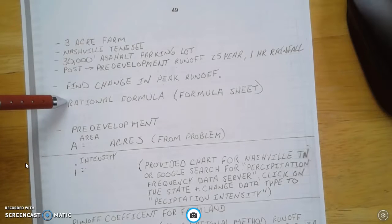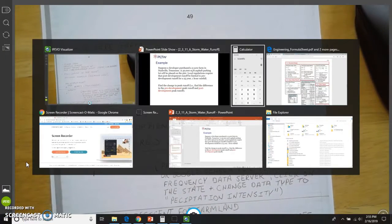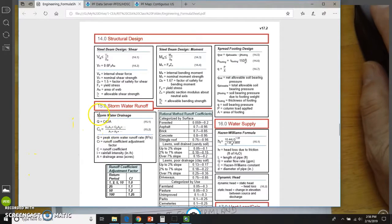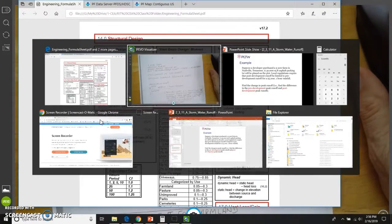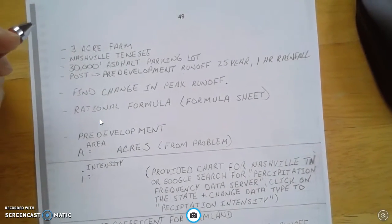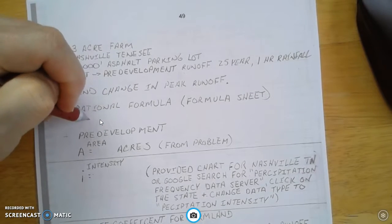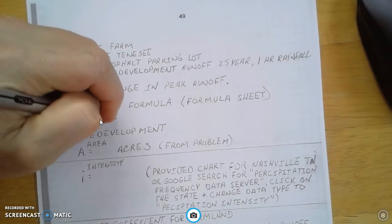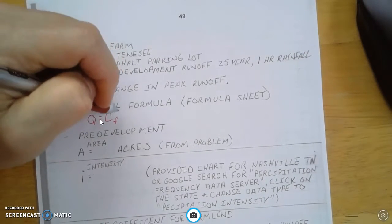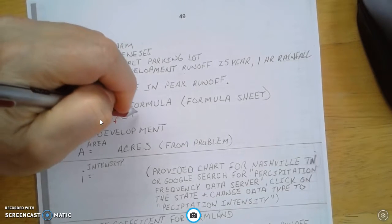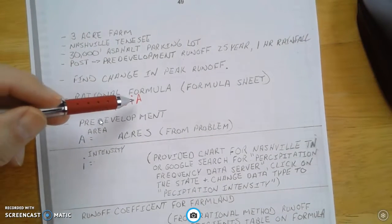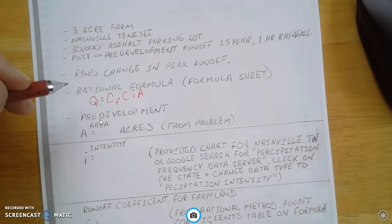So the first thing we need to know is what is the formula, the rational formula. I'm going to go to my formula sheet. And the runoff amount or formula is right here. I'll go back to my handwritten notes. The rational formula is Q equals CF times C times I times A. And we're going to start solving for what these values are or discovering what they are using charts and stuff like that.